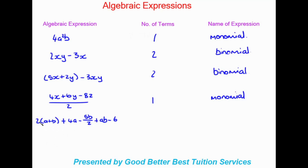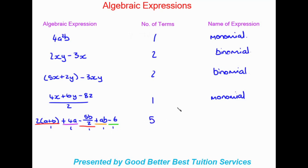This final example combines all of it. The bracketed section multiplied by a number counts as one term, with no addition or subtraction between them. Then we have another term, plus 4a, then a fraction which counts as one term, another term, and a last term. If it helps, break it up by colour-coding or putting a shape under each term — we can count one, two, three, four, five terms.